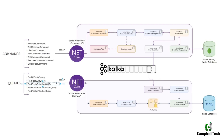A find post by author query that will be used to return all social media posts by a specified author, the find posts with comments query for returning all posts that have comments, and finally the find post with likes query that will be used to return posts that have a certain amount of likes or more.